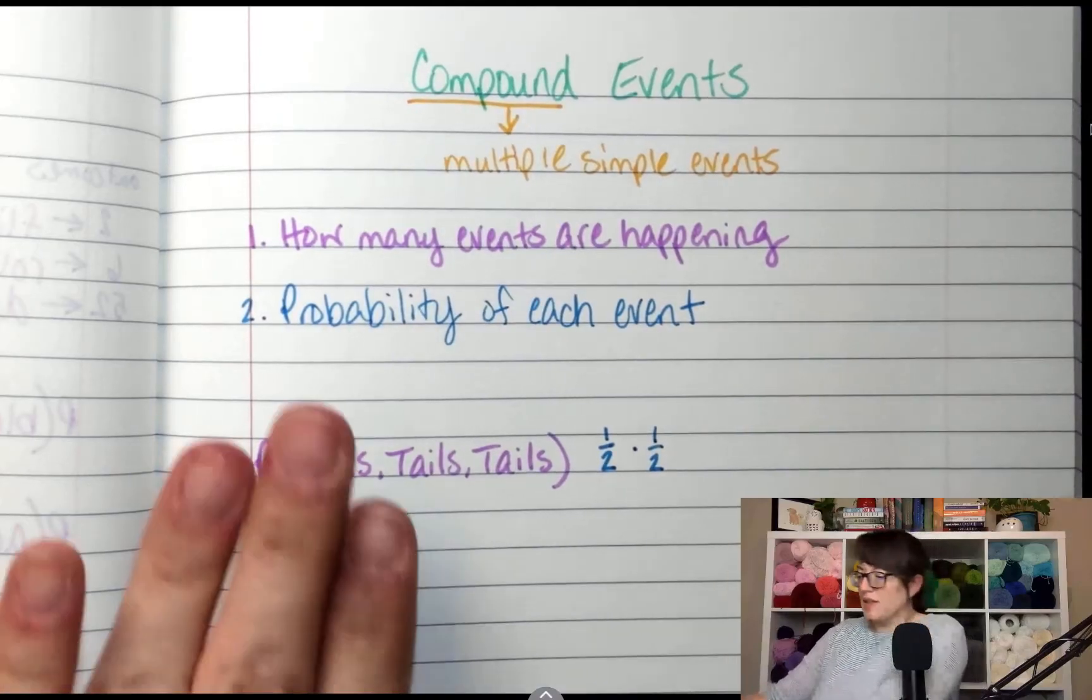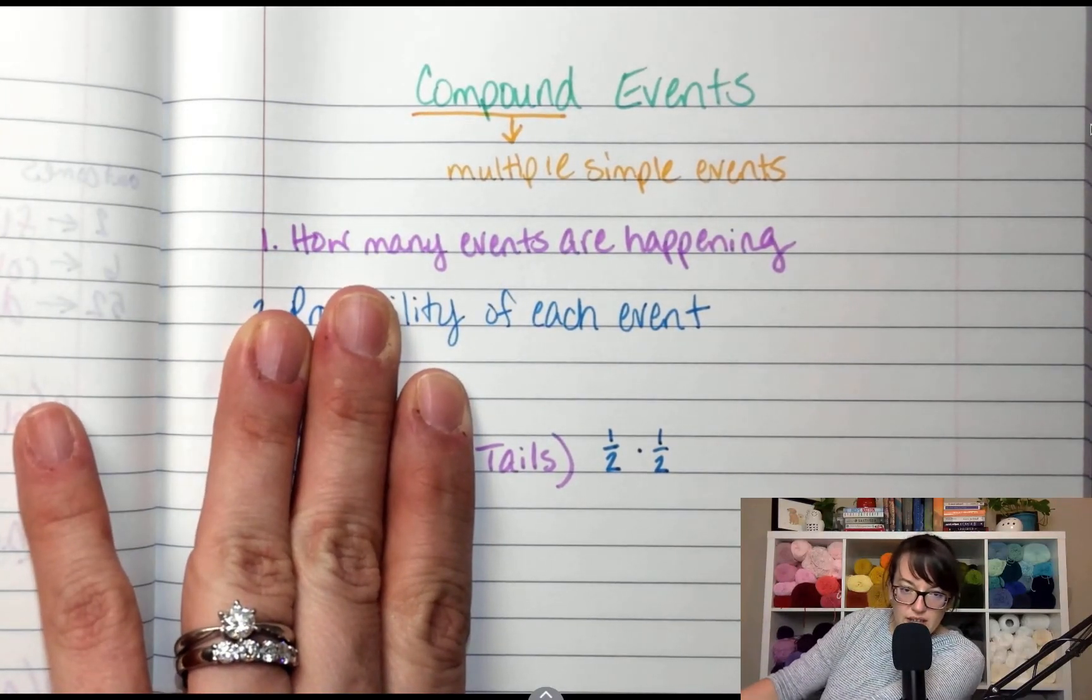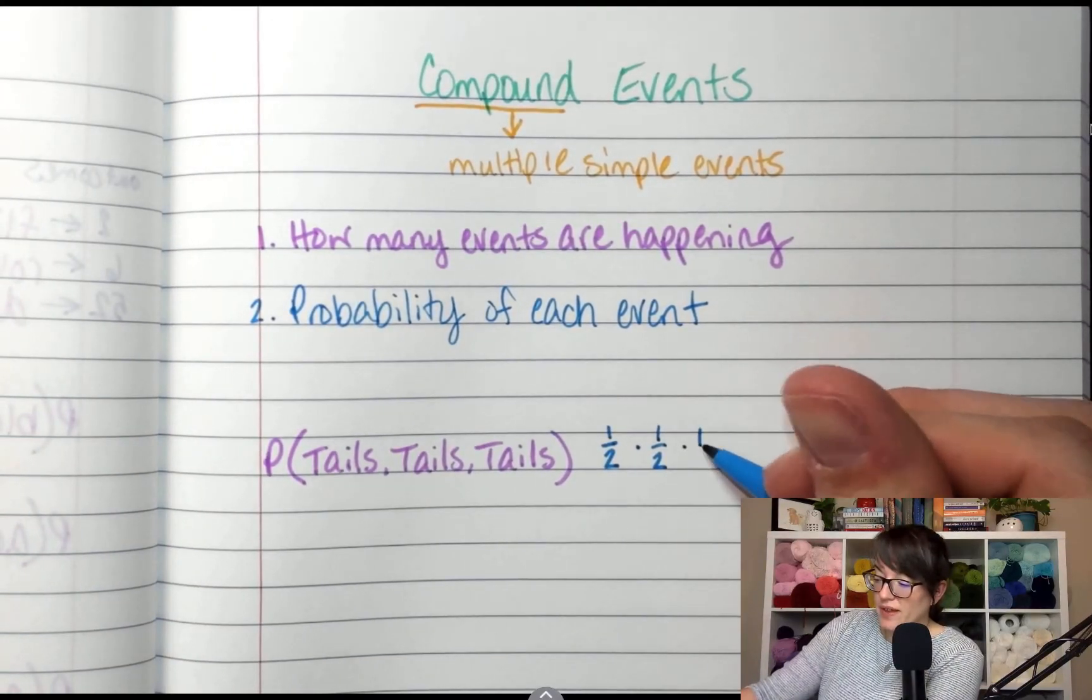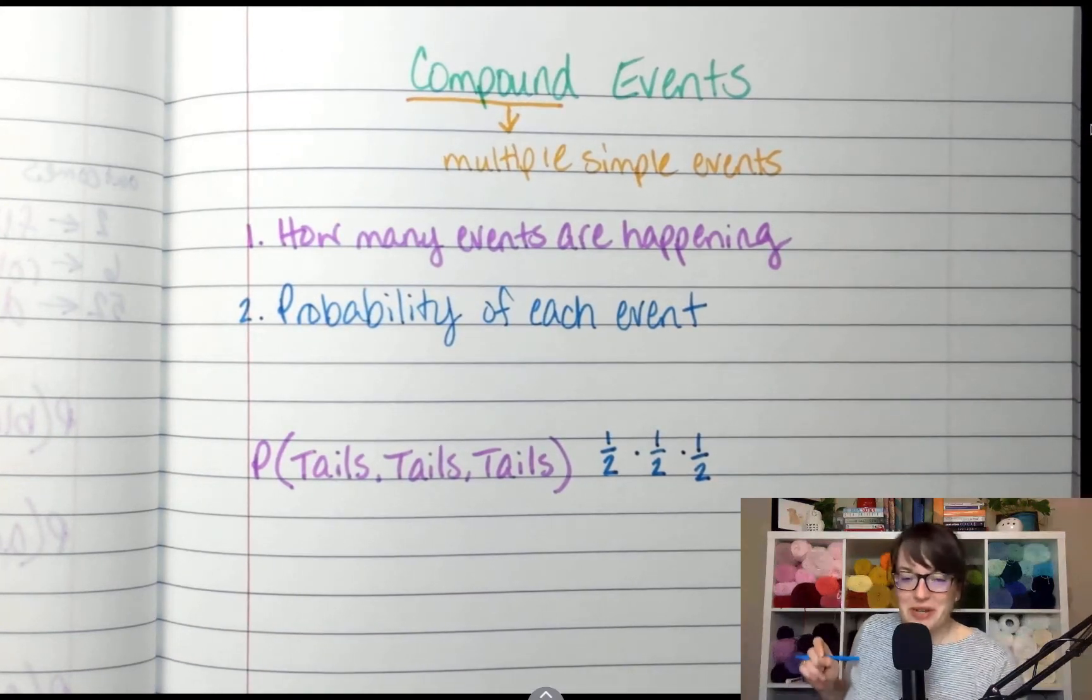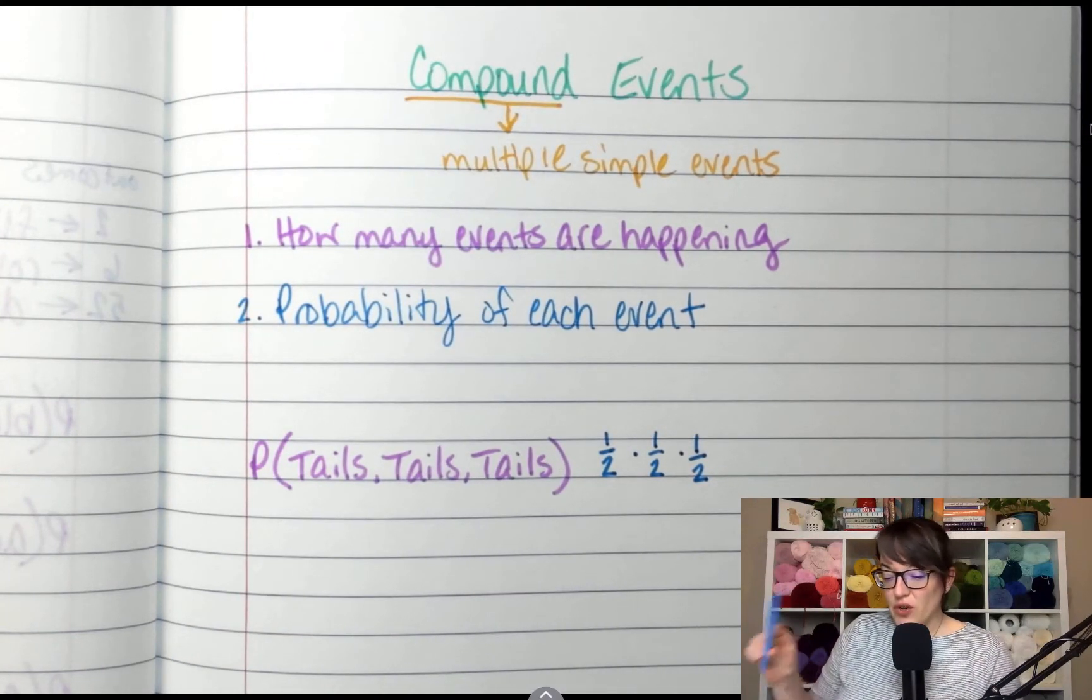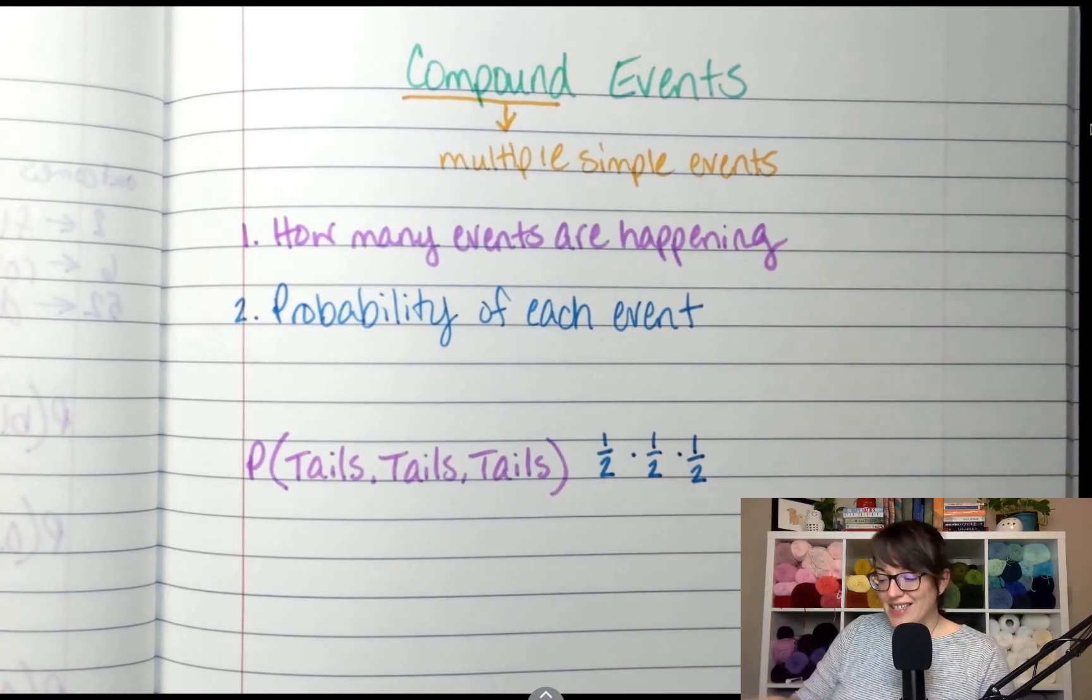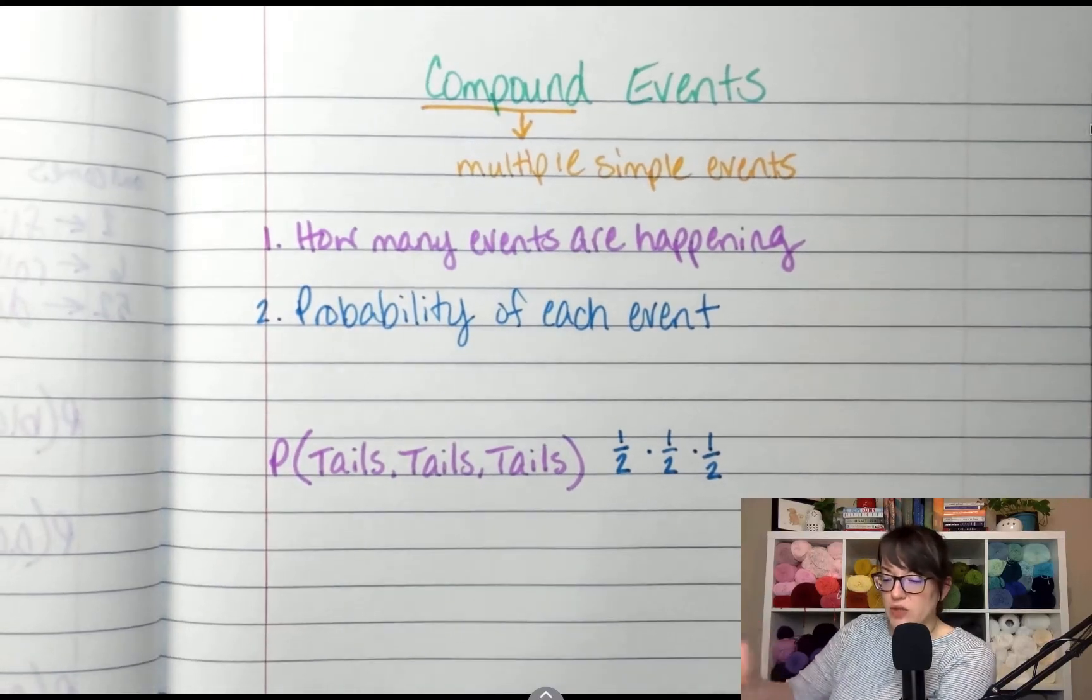All right. Third event. What is the probability that you will flip a coin and it will land on tails? Yeah, it's one over two. And I know you probably felt like that was redundant, but this question gets missed every year. So once I have my three probabilities, the last step for me to do is to multiply those probabilities together.